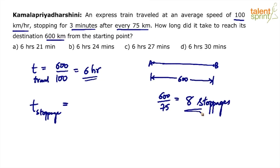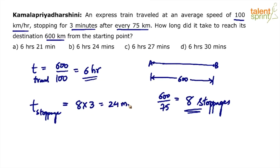The number of stoppages is 8, and at each stop it waits for 3 minutes. So total stoppage time would be 8 × 3 = 24 minutes. Travel time is 6 hours, stoppage time is 24 minutes, giving an answer of 6 hours 24 minutes — but wait, this is incorrect.